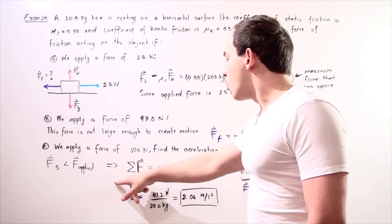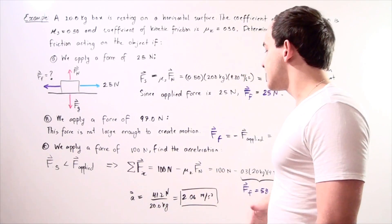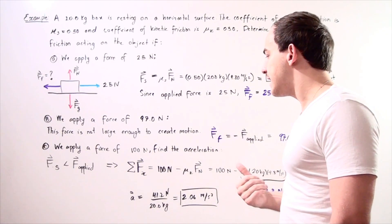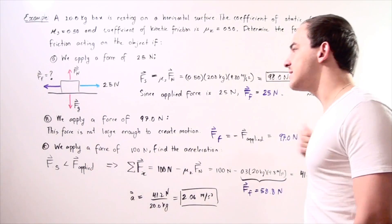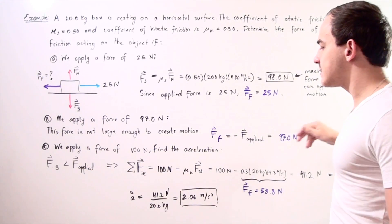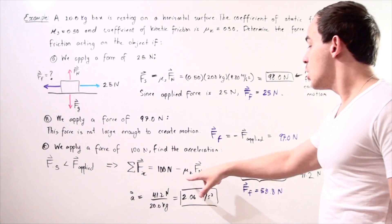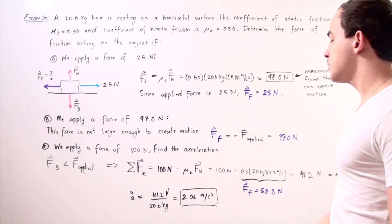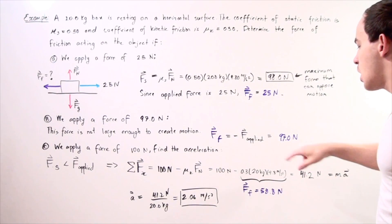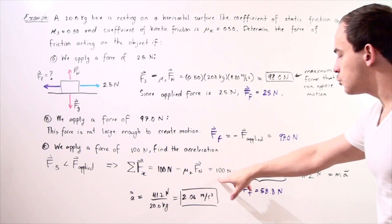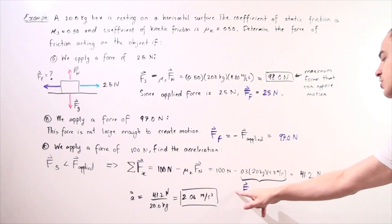The sum of all the forces acting along the x axis is equal to the positive force minus the negative force. We have 100 newtons that we apply along the positive direction in the x axis minus our kinetic friction. The coefficient of kinetic friction multiplied by the normal force equals mass times acceleration. We plug in our values and we see that 100 newtons minus the force of kinetic friction, which is 58.8 newtons, gives us 41.2 newtons.